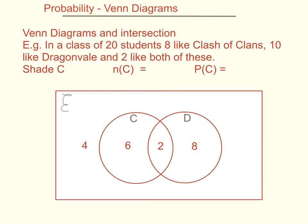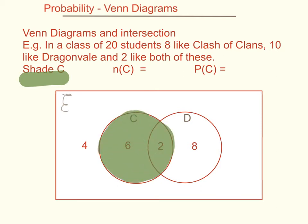Now we'll use the Venn diagram to work out some probabilities. First, shade C — colouring in the entire Clash of Clans circle. The number in C is 6 plus 2, which equals 8. The probability of C is the 8 people inside circle C divided by the total outcomes of 20, so that's 8 over 20, which equals 0.4.